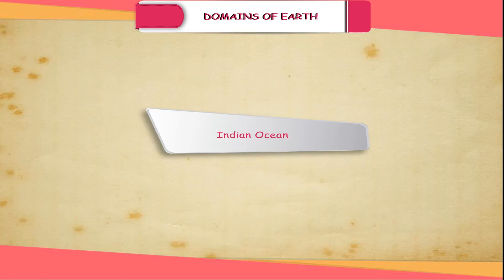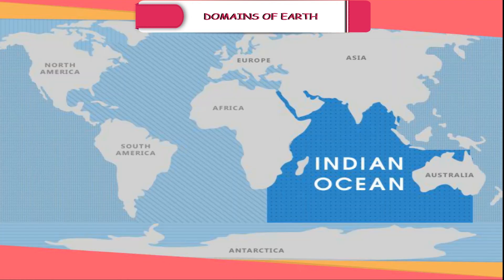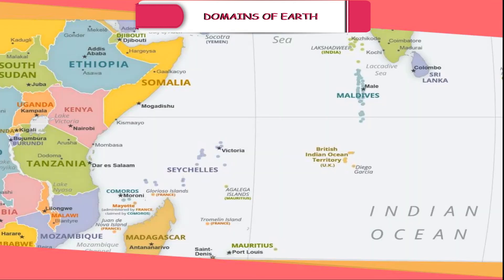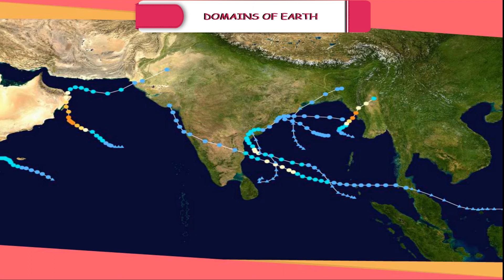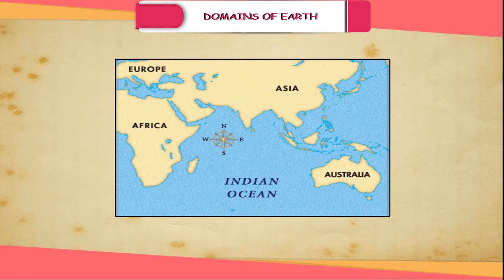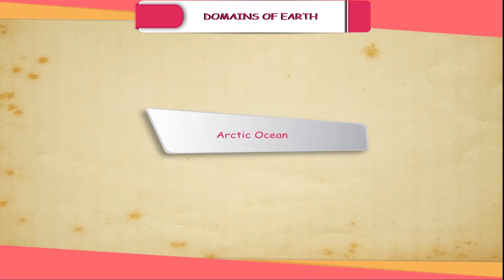Indian Ocean. It is the only ocean named after a country, that is India. The shape of the ocean is almost triangular. In the north it is bounded by Asia, in the west by Africa and in the east by Australia.